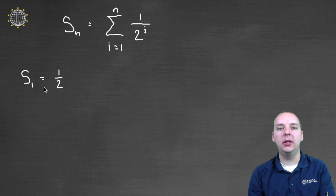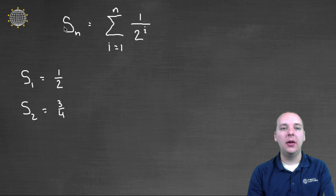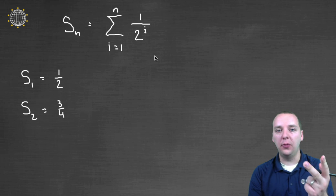If you wanted S sub 1, you'd take just the first term. It's a half. Very quick and easy. If you wanted S sub 2, then that's the sum of the first two terms, which is the sum i equals 1 to 2 of 1 over 2 to the i. So that's a half plus a fourth. It gives you 3 fourths.